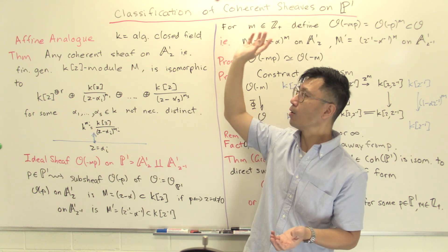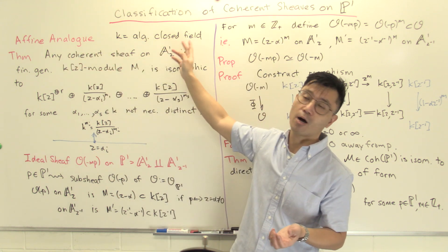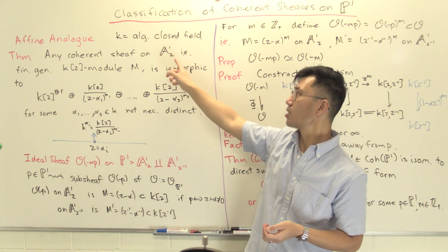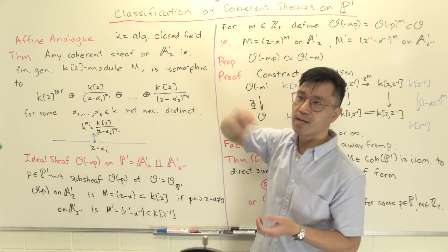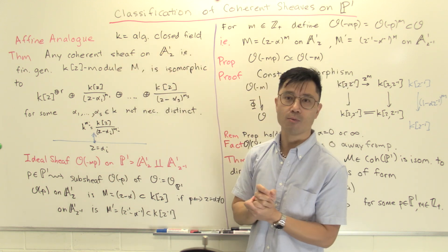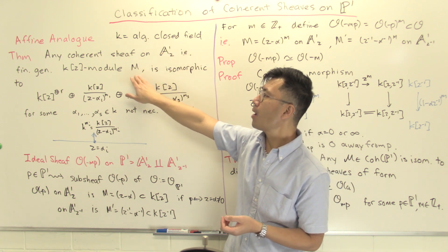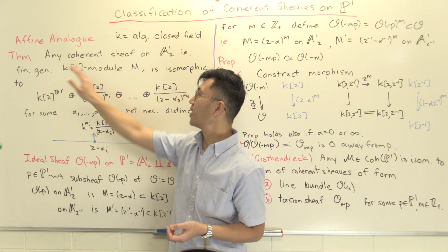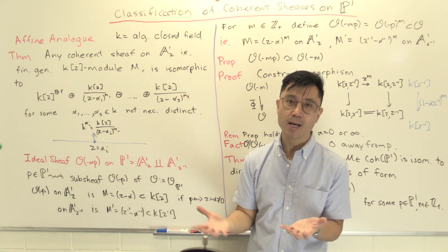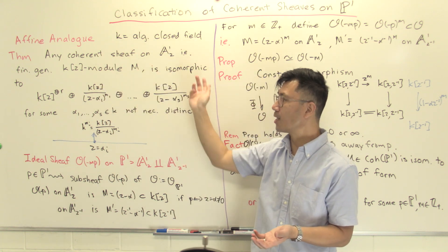Let's look at the affine case first. In this affine analog, we'll just fix here an algebraically closed field K and look at the affine line over K, A1_Z. If we consider any coherent sheaf on this affine variety, that just means you have a finitely generated module M over its coordinate ring K[Z]. In this case K[Z] is a principal ideal domain, so the structure theory for such finitely generated modules is quite clear.